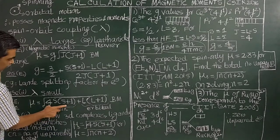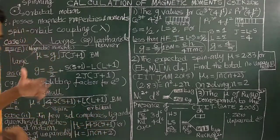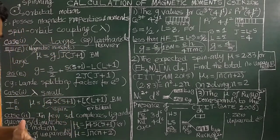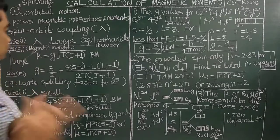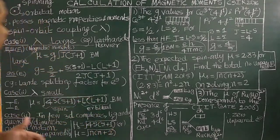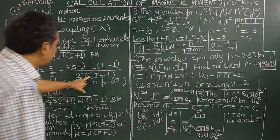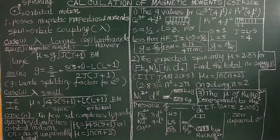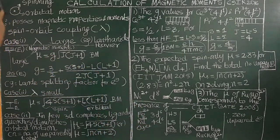The spin magnetic moment and orbital magnetic moment are calculated separately because there is negligible coupling. Therefore, the magnetic moment is calculated as the square root of [4S(S+1) + L(L+1)] Bohr magnetons, where S is the resultant spin angular momentum quantum number and L is the resultant orbital angular momentum quantum number. J equals L plus S or L minus S.